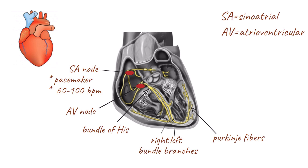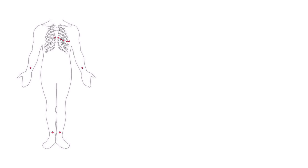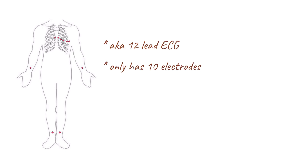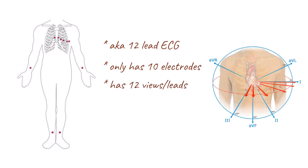During ECG, the correct placement of the electrodes is important as misplacement can result in misinterpretation and incorrect diagnosis. The common ECG is also somewhat confusingly called a 12-lead ECG even though it only has 10 electrodes. These 10 electrodes allow the electrical activity of the heart to be viewed from 12 different positions, also called leads, thus the name 12-lead ECG.